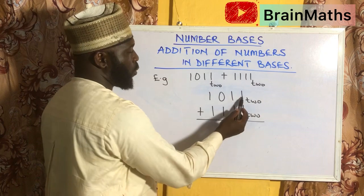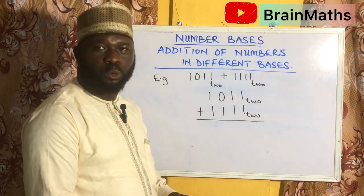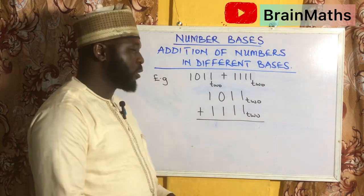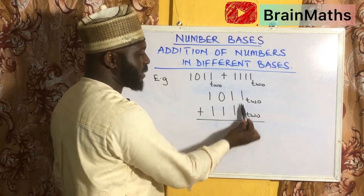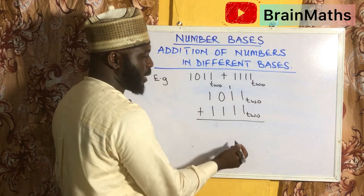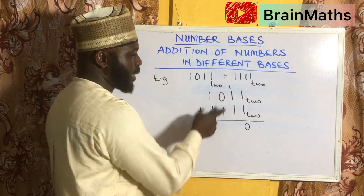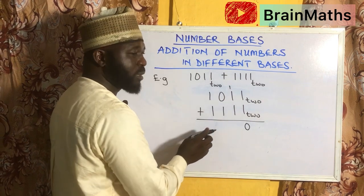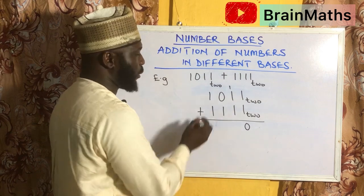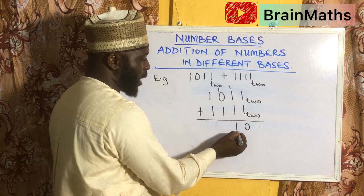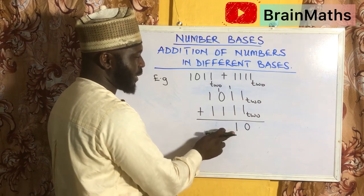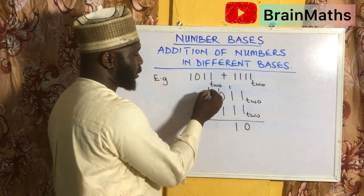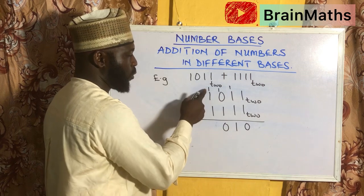So we have 1 plus 1 which gives us 2. Due to the fact that we are working in base 2, we cannot write 2 as our answer. So we ask: how many 2s can I get in 2? That is 1 remainder 0. Then adding the next column: 1 plus 1 is 2, plus 1 carried is 3. How many 2s can I get in 3? That is 1 remainder 1. Again, 1 plus 1 is 2. How many 2s can we get in 2? That is 1 remainder 0.